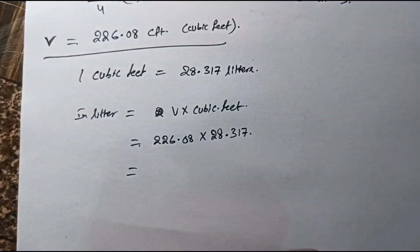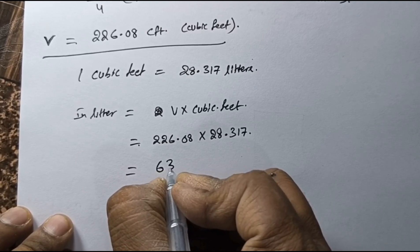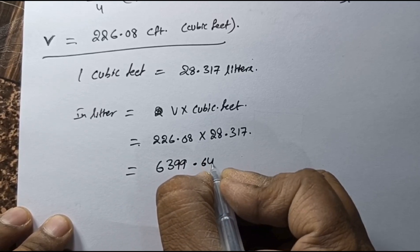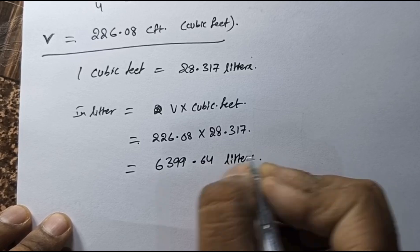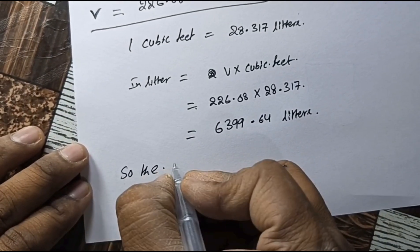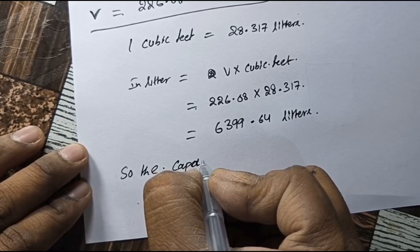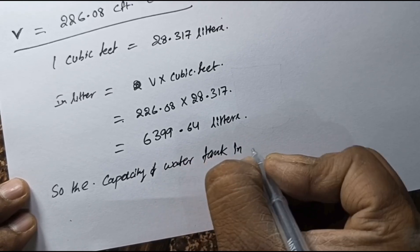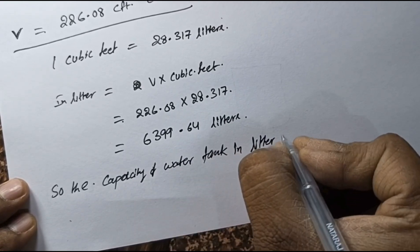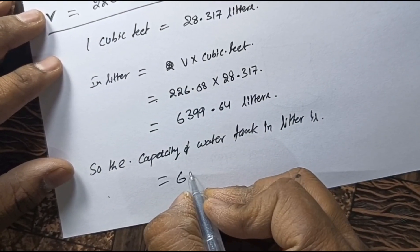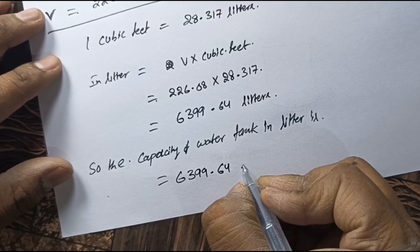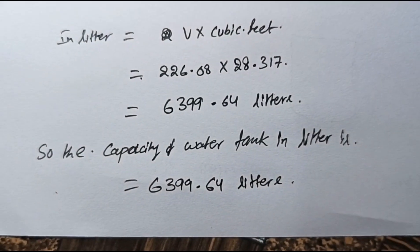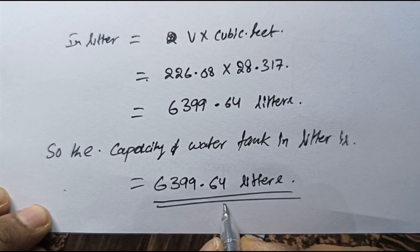When we calculate this value, we get approximately 6,399.64 liters. So the capacity of the water tank in liters is six thousand three hundred and ninety-nine point sixty-four liters.